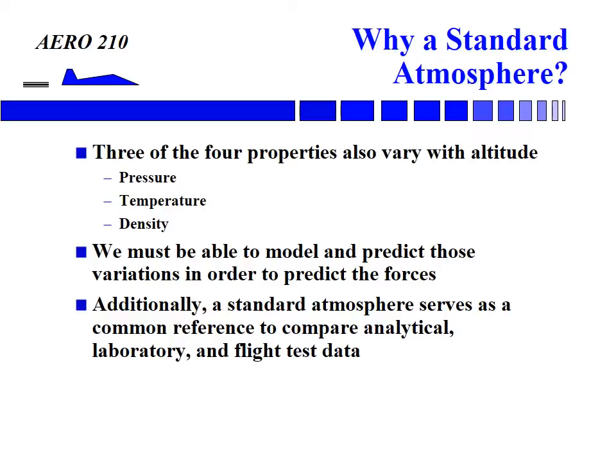Alright, so let's get started. We have three of the four flow properties—pressure, temperature, and density—that vary with altitude in the standard atmosphere, so we have to model that. We have to model a standard atmospheric variation of those properties for accurate analysis and comparisons.